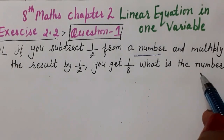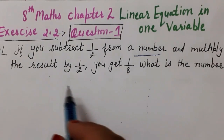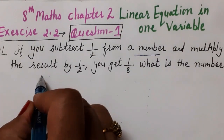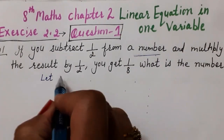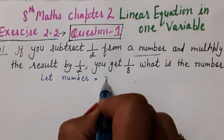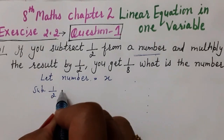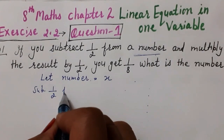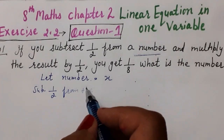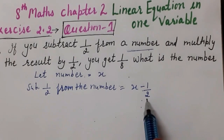इस exercise में हम mainly सीखेंगे equations बनाना और उनको solve करना। सबसे पहले कहा है: if you subtract 1/2 from a number, किसी number में से आप 1/2 subtract करते हो। तो हम number let कर लेते हैं — let number = x. और उसमें से 1/2 subtract करना है, subtracting 1/2 from the number — तो मिलता है x minus 1/2.